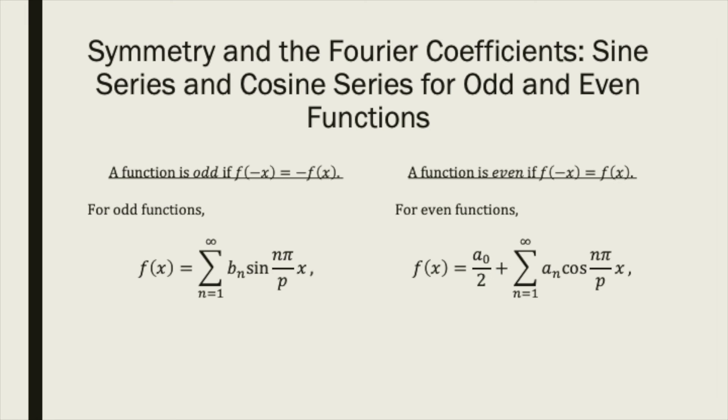When a function is odd, the Fourier coefficients of the constant and cosine functions will be equal to 0. We can then write its Fourier series in terms of sine functions alone. This is fittingly called a sine series.